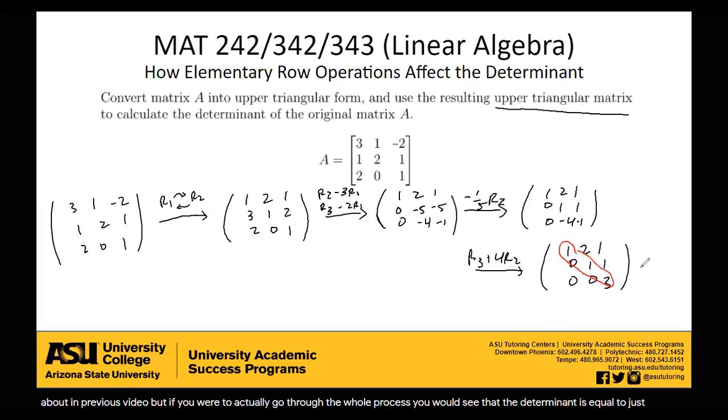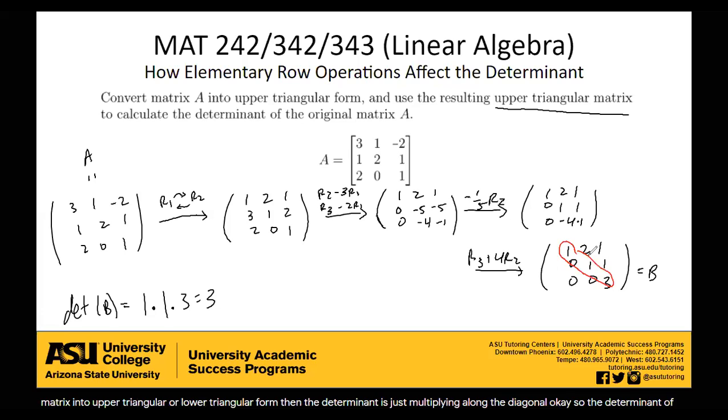Okay? So the determinant of this matrix, I'm going to call this matrix B, and I'm going to call this matrix A. So the determinant of B ends up just being 1 times 1 times 3. So it's 3. This is a very useful tactic. If you can get a matrix into upper triangular or lower triangular form, then the determinant is just multiplying along the diagonal. So the determinant of this matrix is 3.